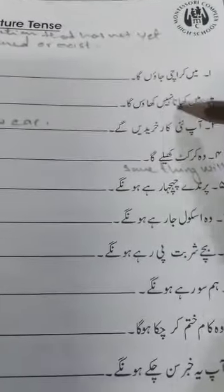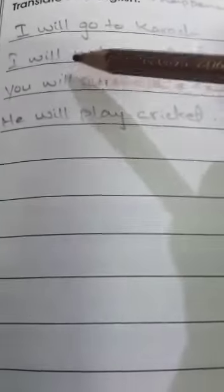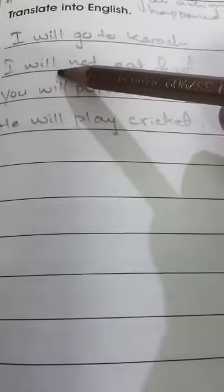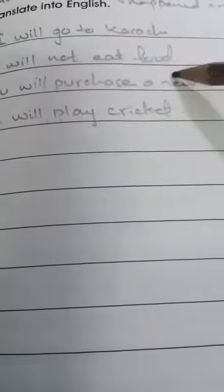The second sentence is, I will not eat food. We use not after the helping verb. Will is our helping verb in future tense. So we use the not after the will. I will not eat food.